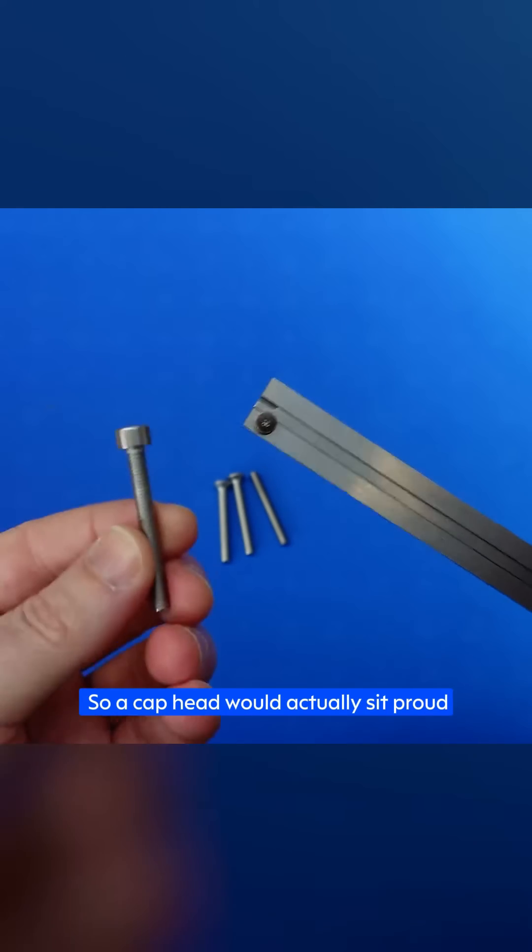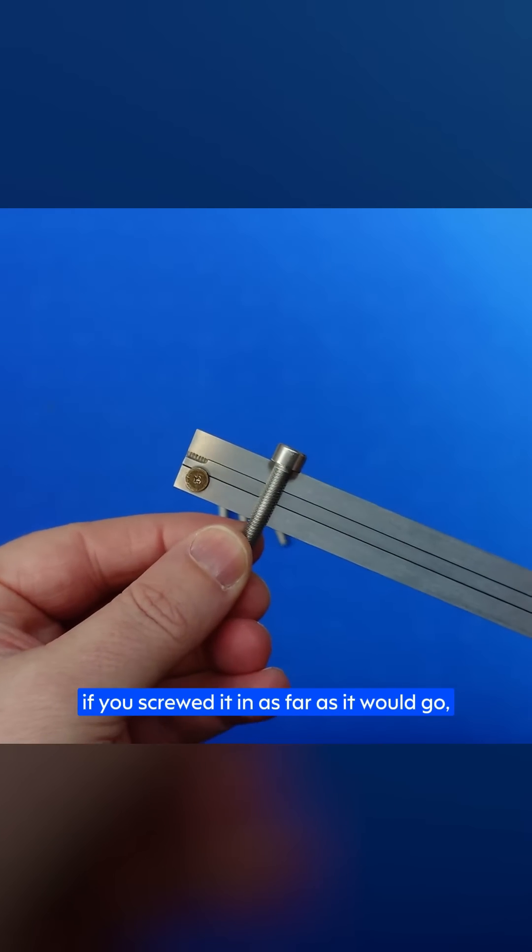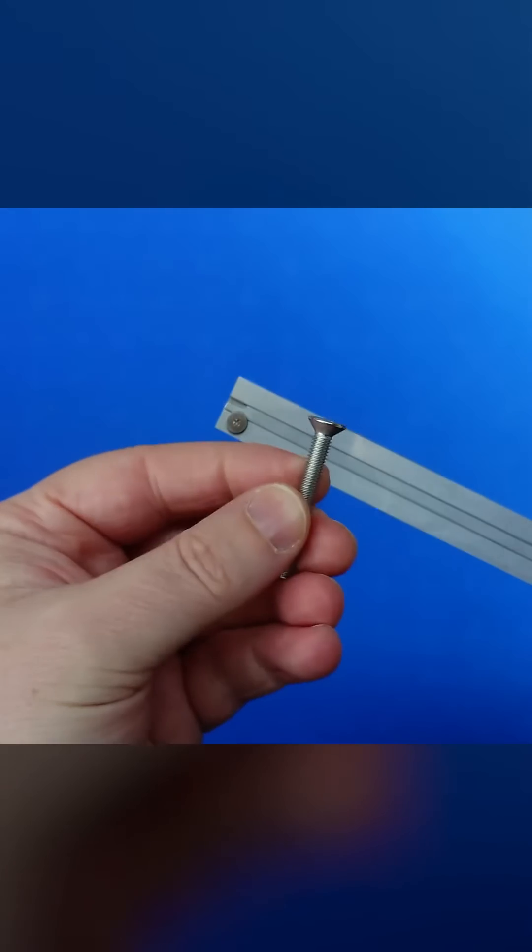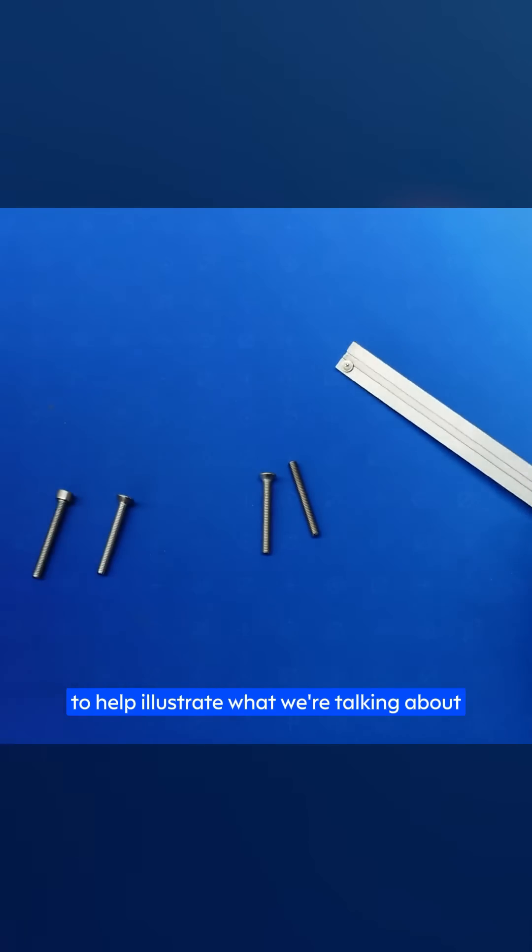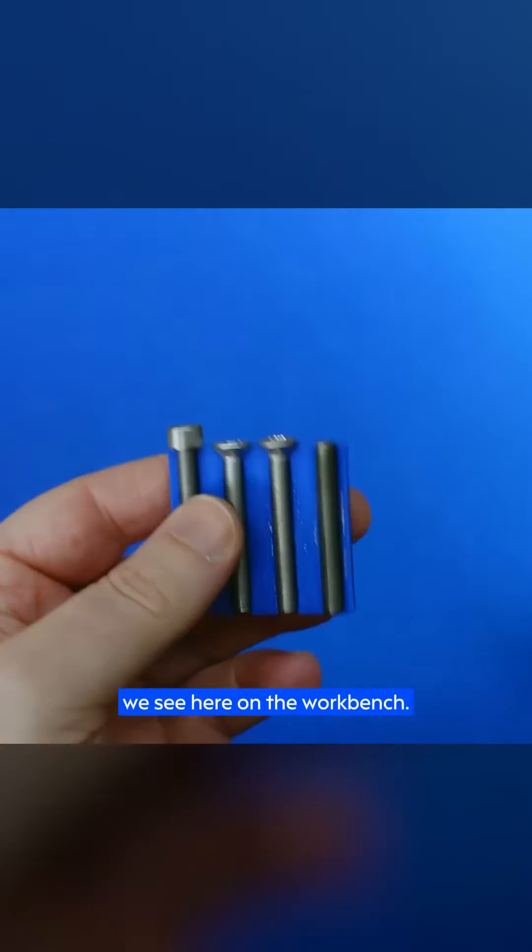So a cap head would actually sit proud if you screwed it in as far as it'd go, whereas a countersunk screw would sit flush. To make this even easier, let me grab this handy jig that I've made up to help illustrate what we're talking about using the same screws you see here on the workbench.